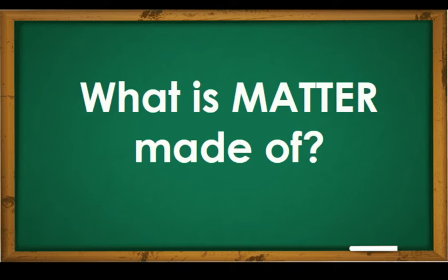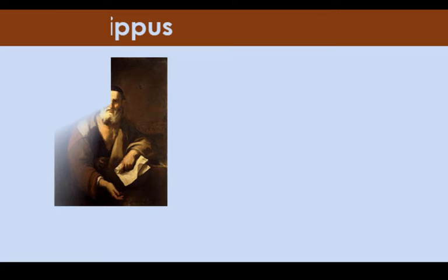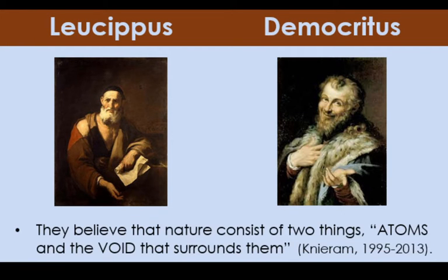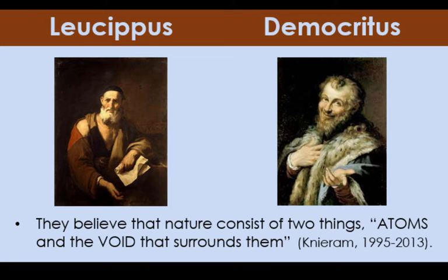Now, let's talk about what is matter made of. Studying about what matter is made of involves dealing with very small particles beyond what our eyes can see. The idea about what matter was made of was proposed by ancient Greeks, philosophers Leucippus and his disciple Democritus. They believe that nature consists of two things, atoms and the void that surrounds them.